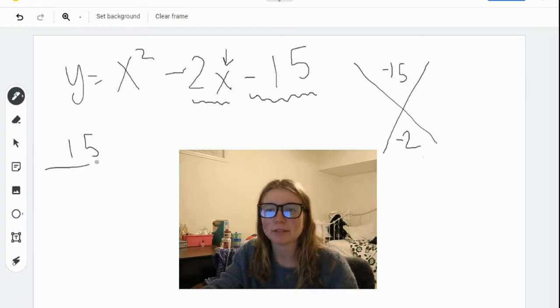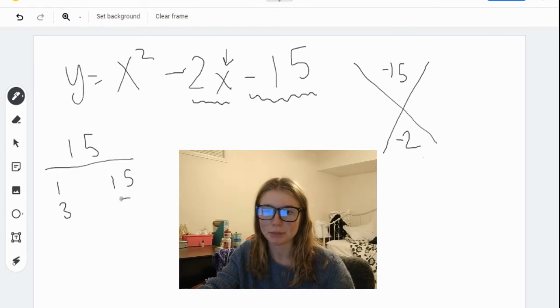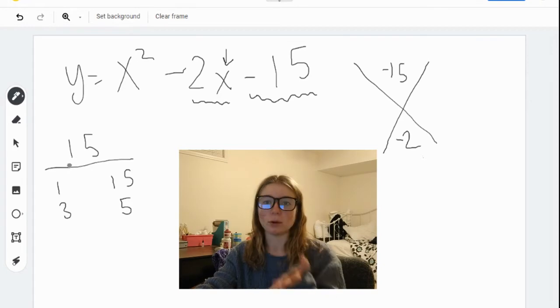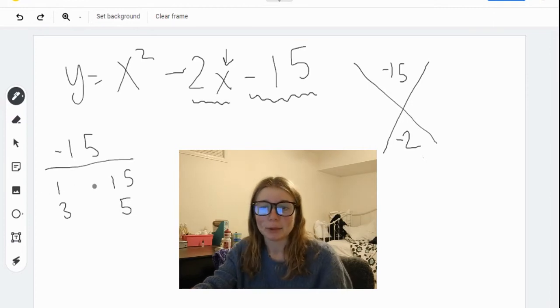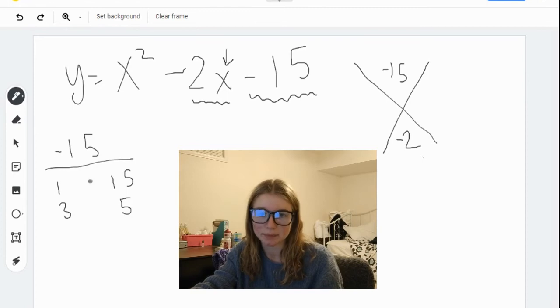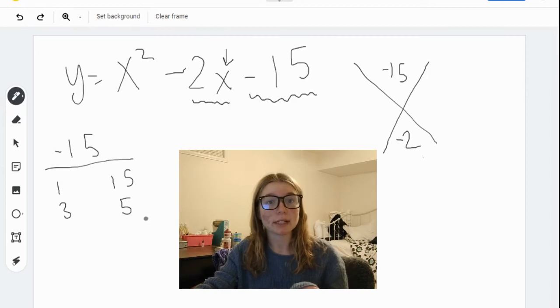So if we've got 15, what are all of the factors of 15? There's 1 and 15, 3 and 5. Those are all the factors of 15. We've also got negative 15, so we can put this sign anywhere. As long as one of these values is negative, then it will multiply to a negative number.